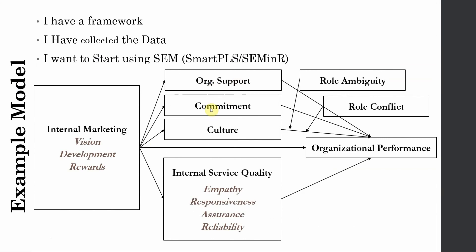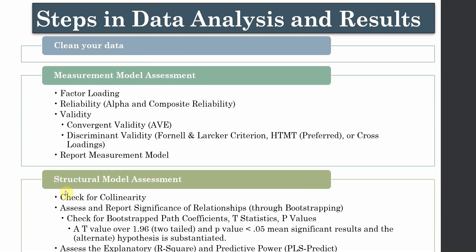Finally, you report your measurement model — we are going to talk about this in great detail as we go along in the series. Once you have reported your measurement model, the next step is structural model assessment, whereby you assess the relationships between variables and whether or not your hypotheses are supported. The first thing you do is check for collinearity, and the next step is to assess and report the significance of relationships through bootstrapping — those relationships may be mediating, moderating, or simple direct relationships.